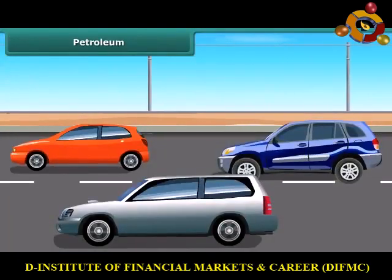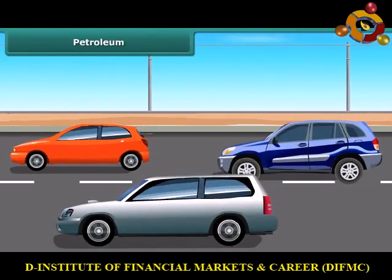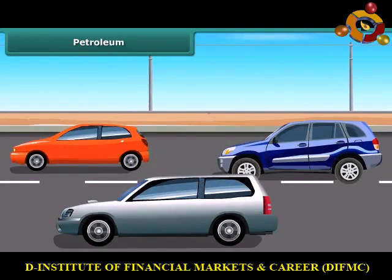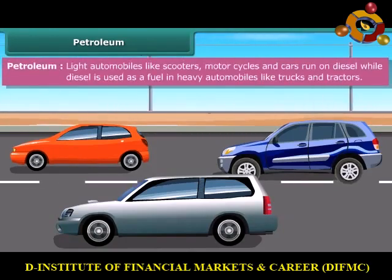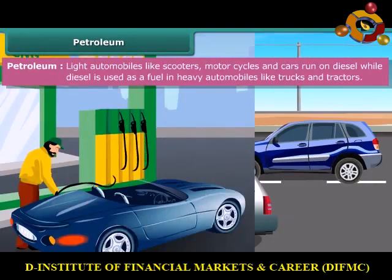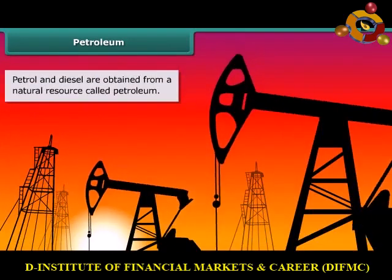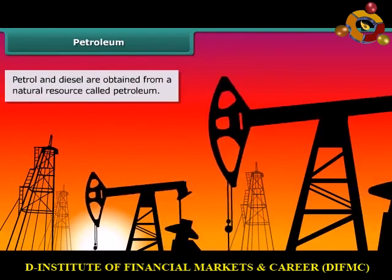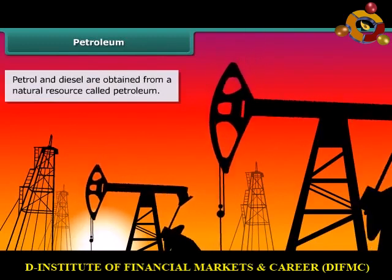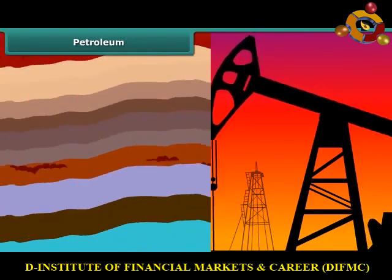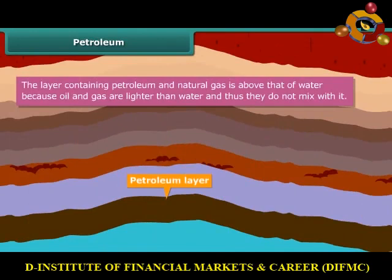I know you all are fond of luxury cars and vehicles, but do you know on which fuel they run on roads? Most of these run on either petrol, diesel, or compressed natural gas, also known as CNG. Petrol and diesel are obtained from a natural resource called petroleum. Petroleum and natural gas deposits exist as a layer above the water layer.